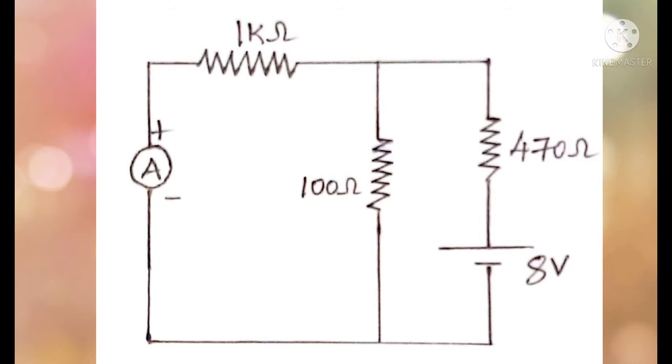The 8 volt source is connected in series to 470 ohms and the current must be measured through the 1 kilo ohm. In both cases, we must get the same value of current. Then we can say that the reciprocity theorem is verified.